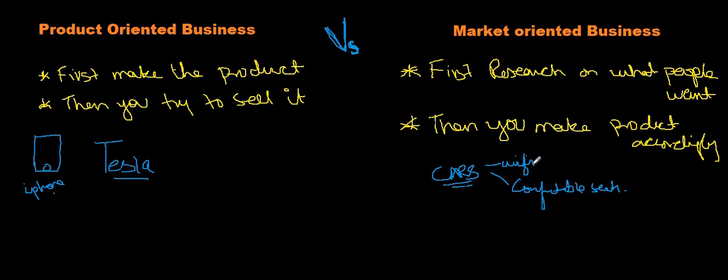A quick summary: a product-oriented business is one whose main focus is on the product itself, whereas a market-oriented business carries out market research to find out what the consumer wants and then develops a product accordingly.